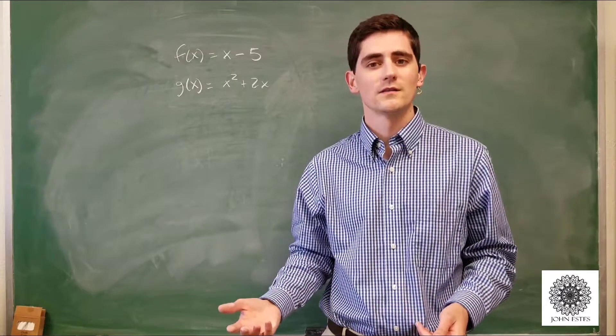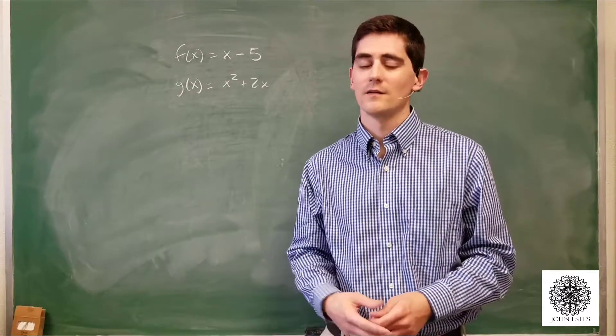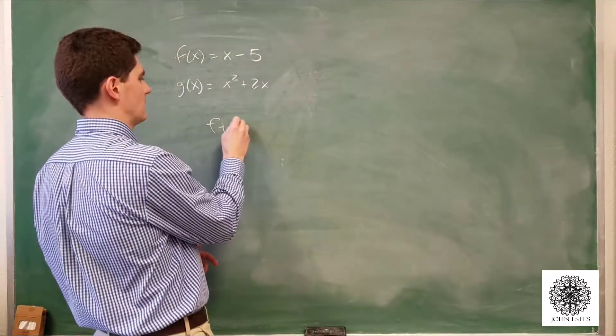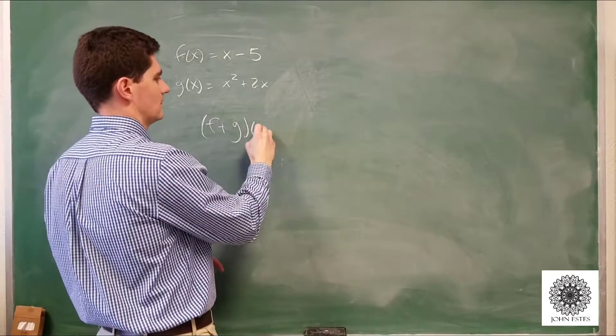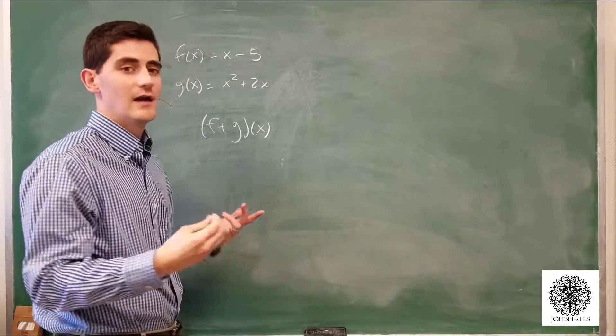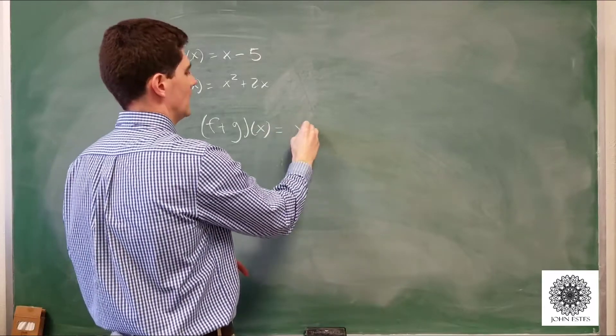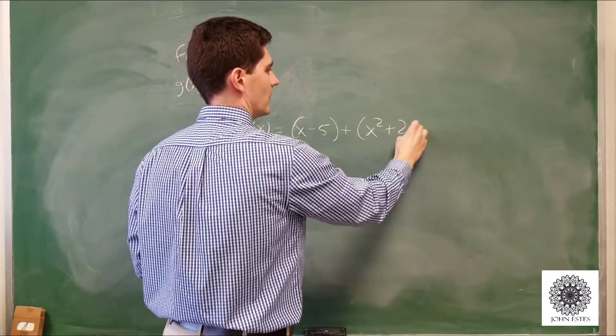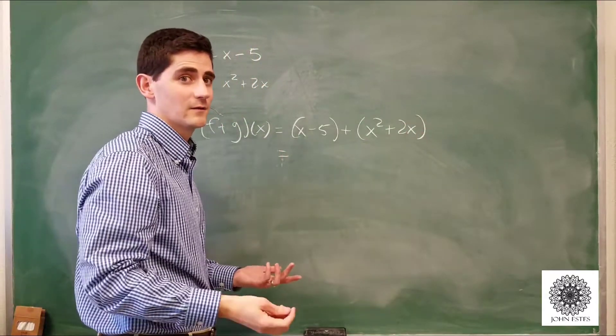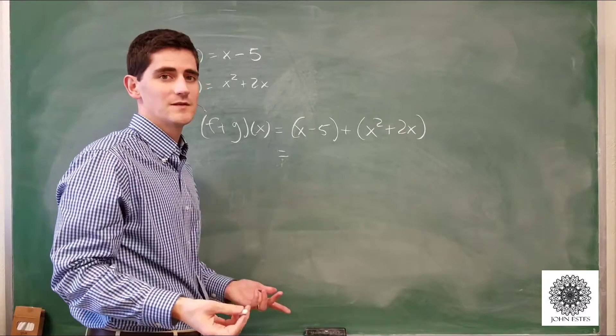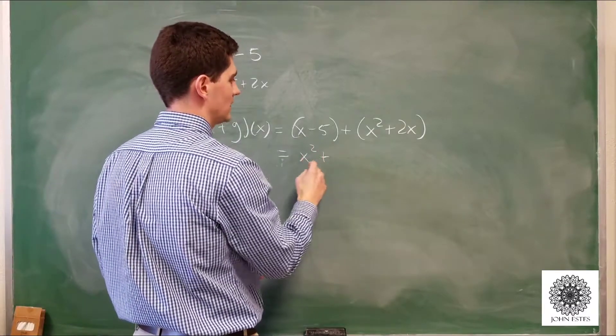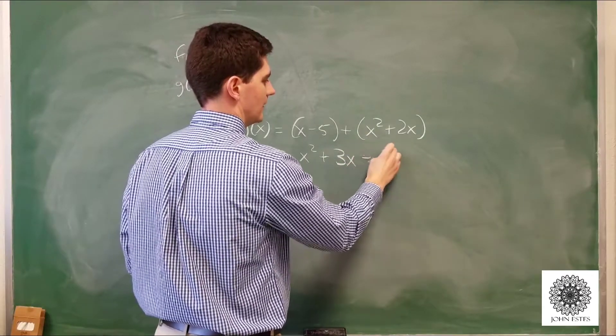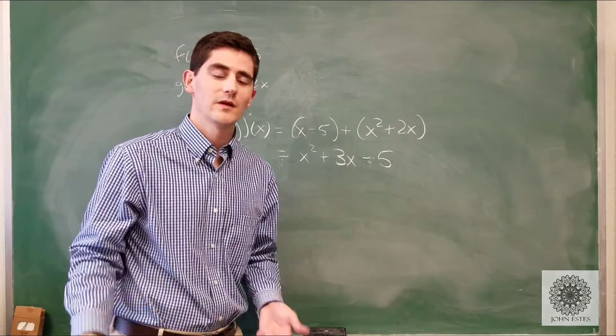And those new functions are exactly as they sound. So for example, f plus g of x is simply adding together f of x and g of x. So that's going to be x minus 5 plus x squared plus 2x. So when I combine my like terms, my new function, which is f plus g of x, looks like x squared plus, adding my x terms together, 3x, and then I have a minus 5.